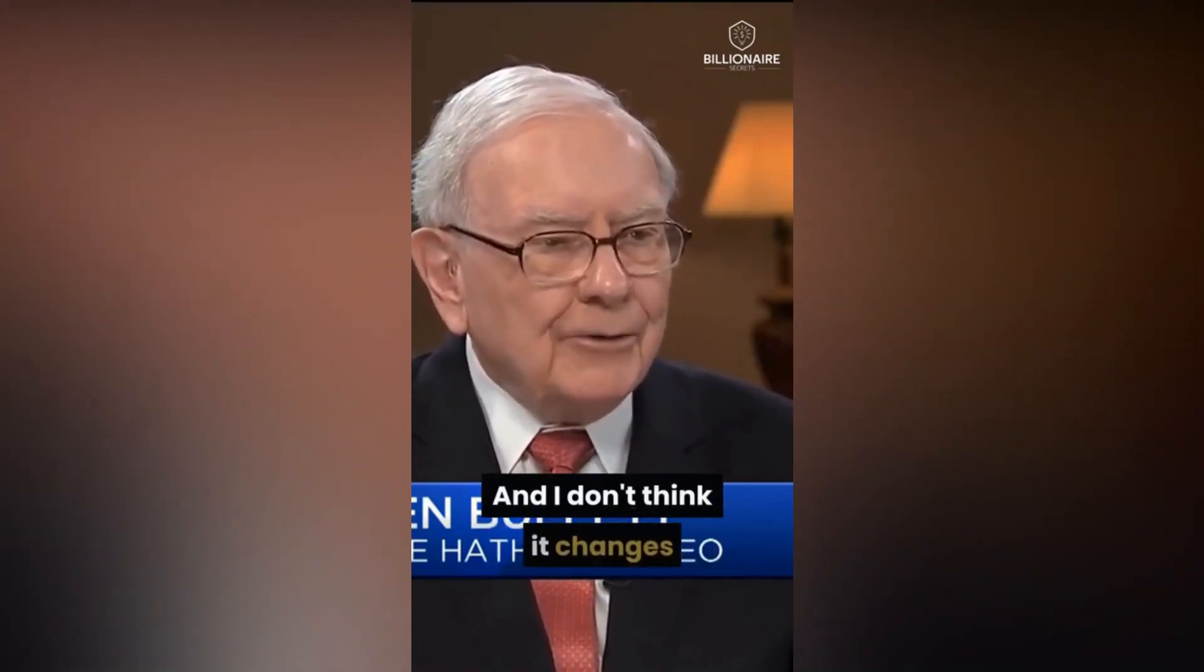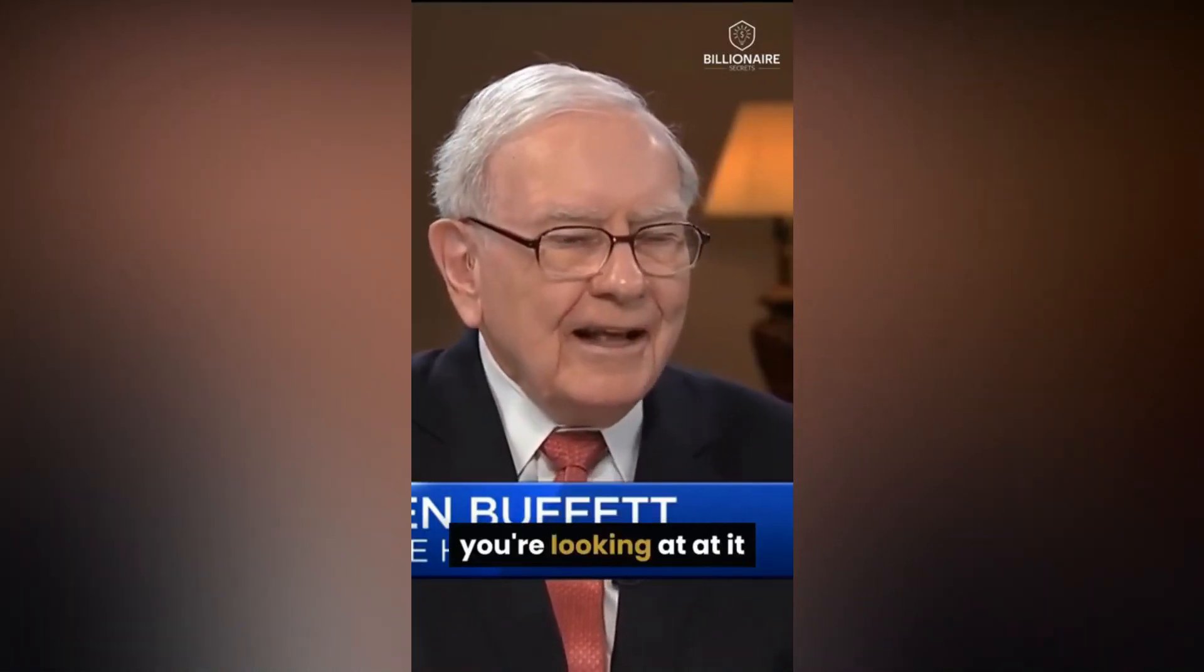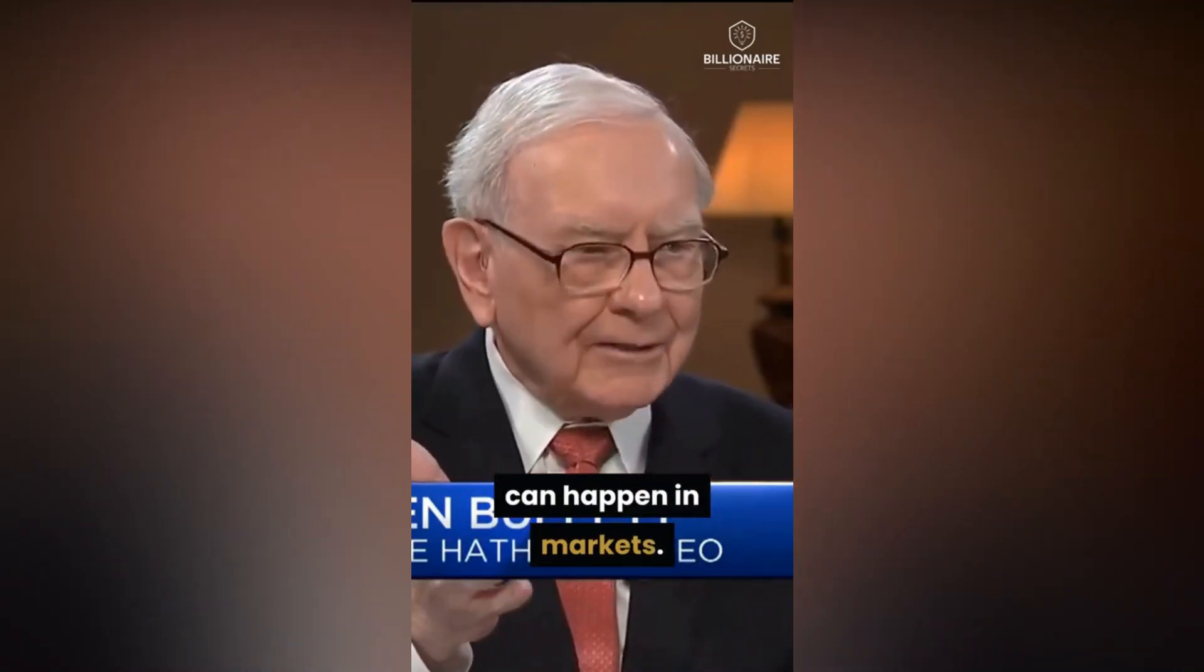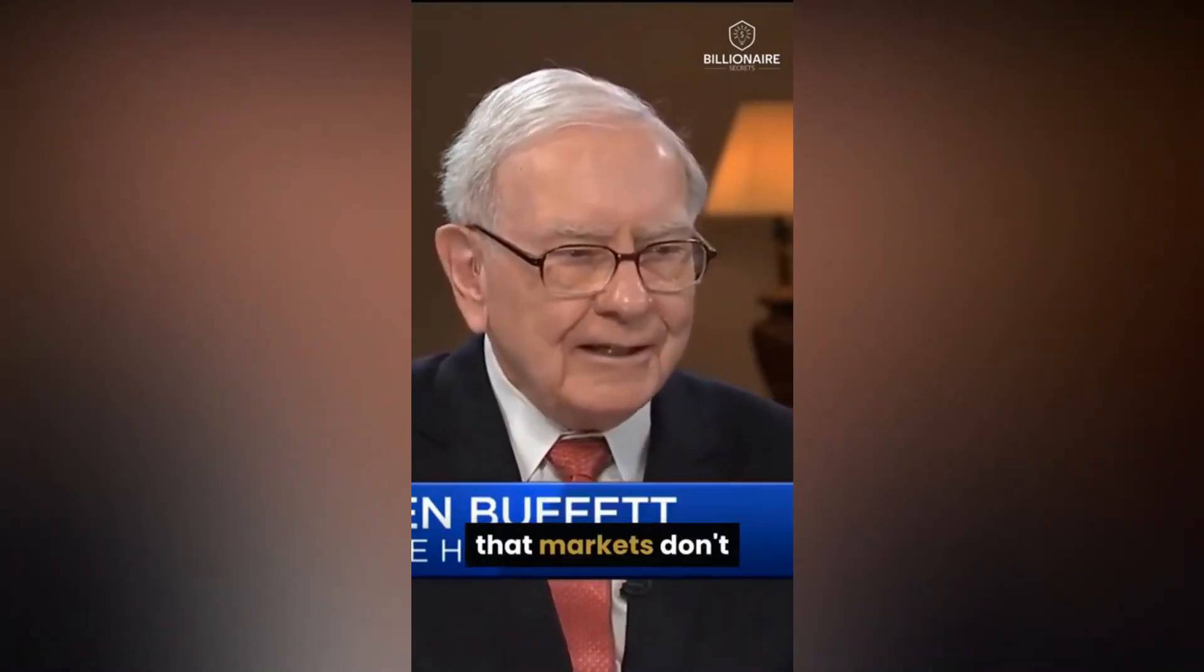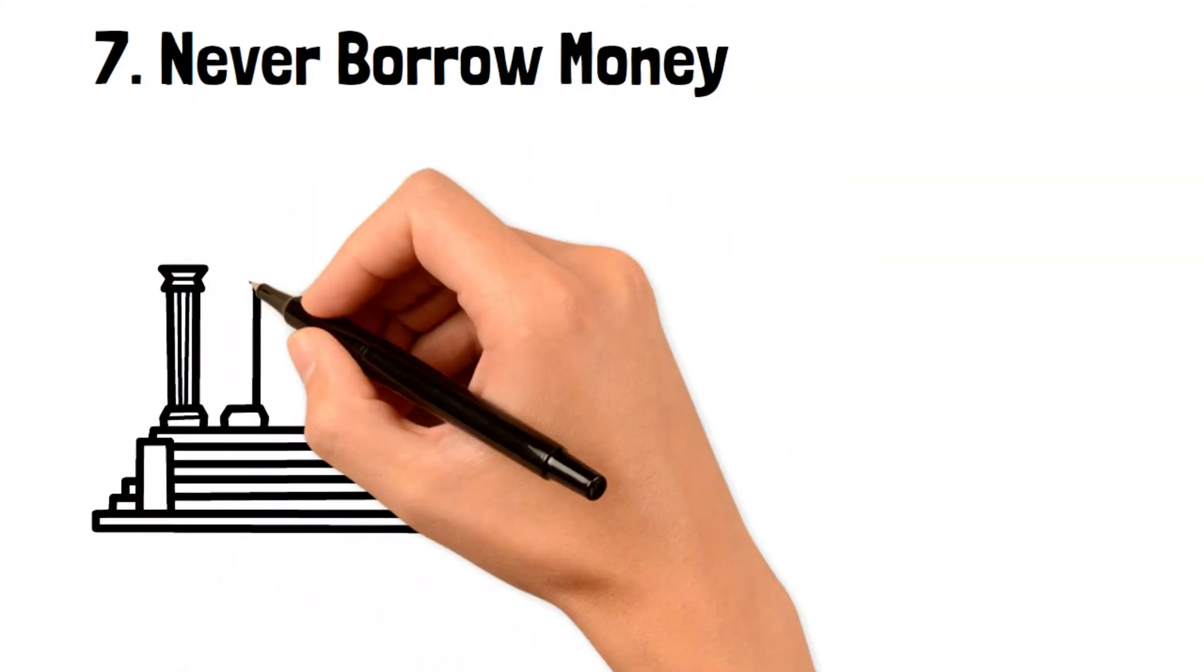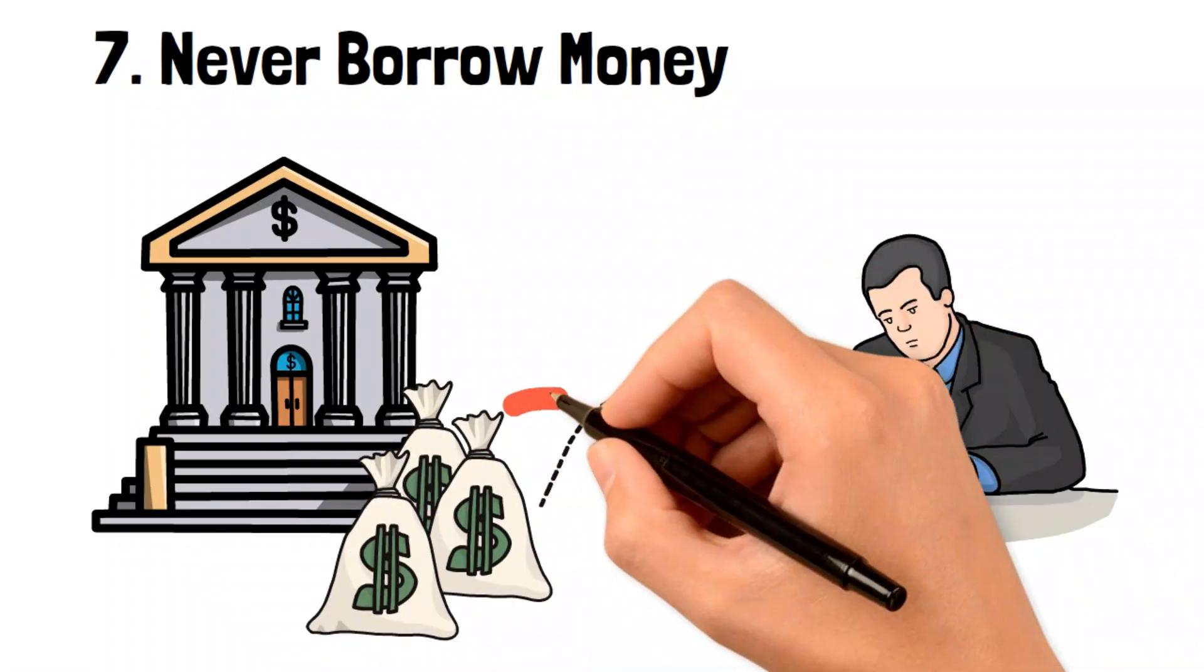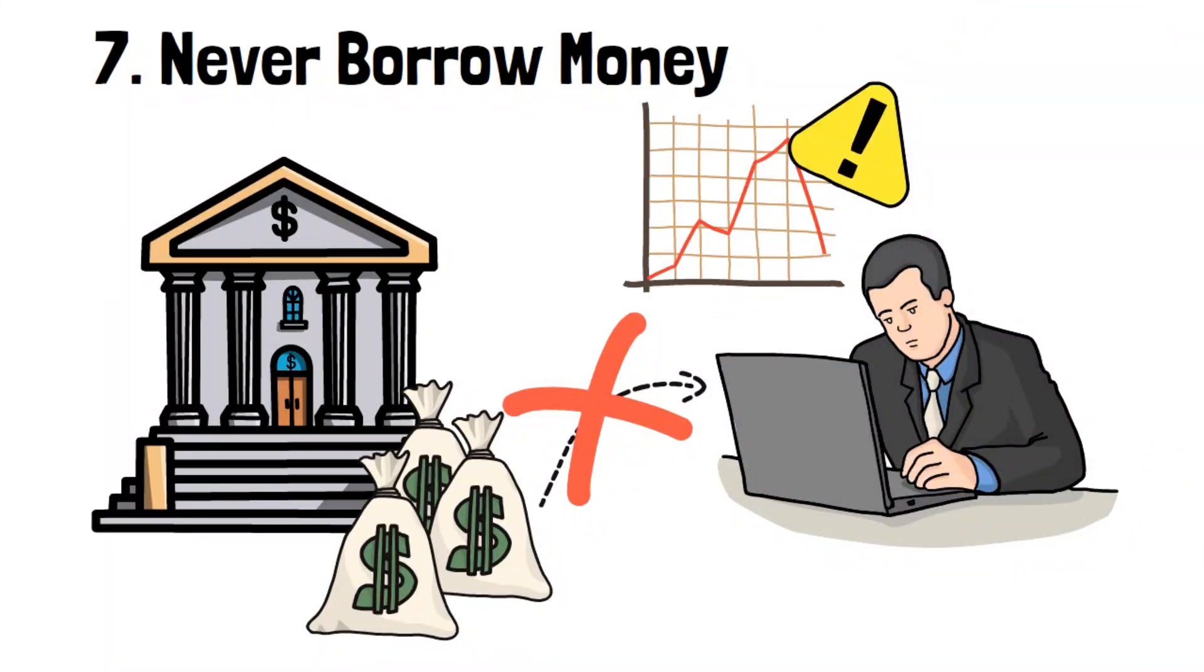Between now and judgment day, I don't think it changes 10 percent in a two-month period. If you're looking at it as a business, anything can happen in markets. That's why I say don't ever borrow money against securities. Markets don't have to open tomorrow. You can have extraordinary events. So the seventh rule focuses on the dangers of borrowing money to invest. While it might seem like a good idea, history shows that this can be risky, especially when the market is unpredictable. Being cautious and not taking on unnecessary risks can save you a lot of trouble.